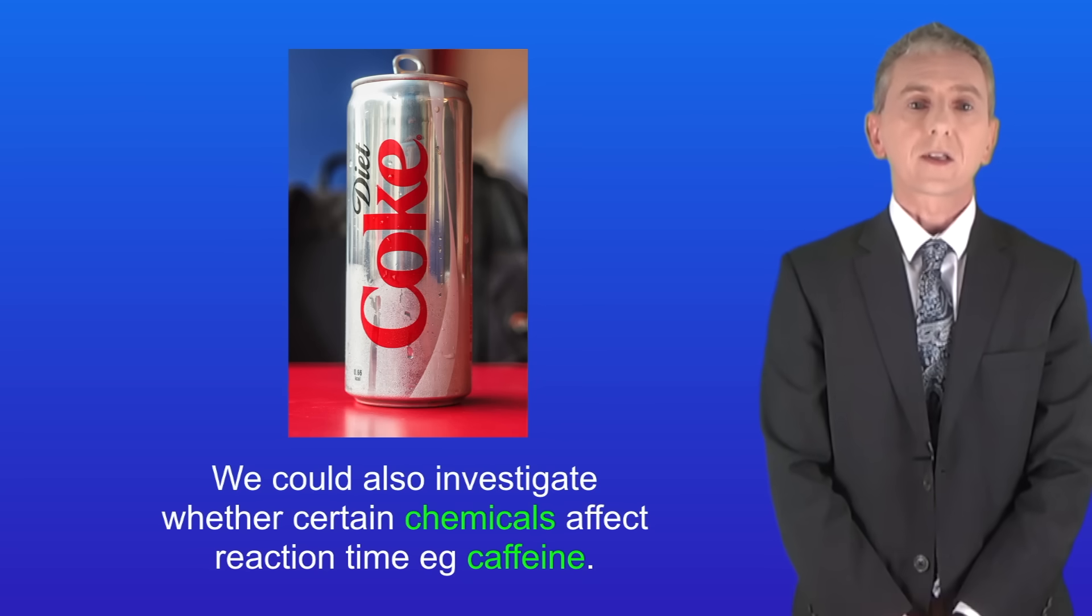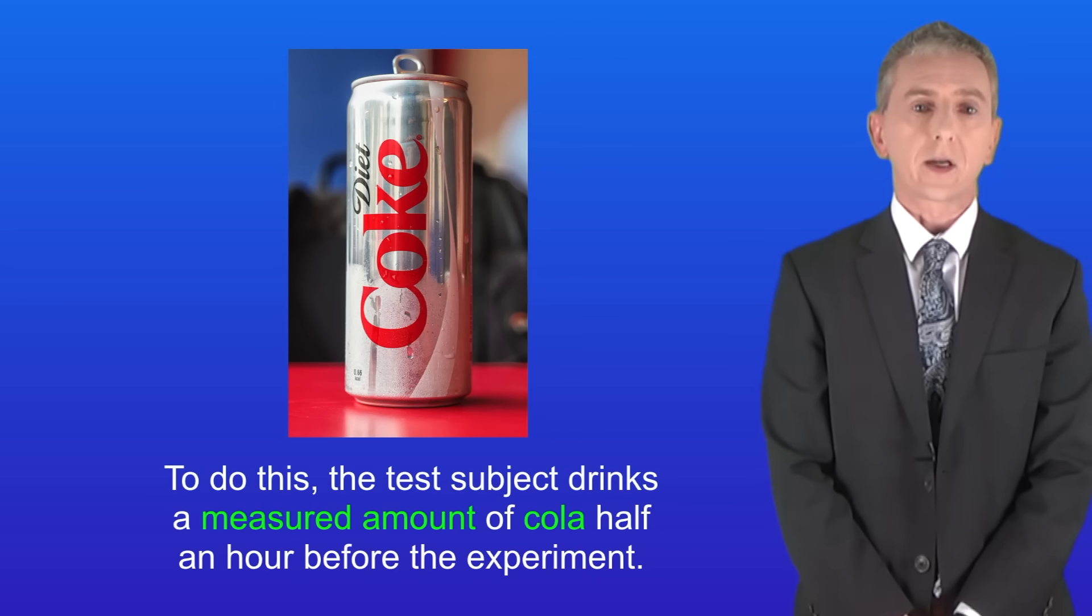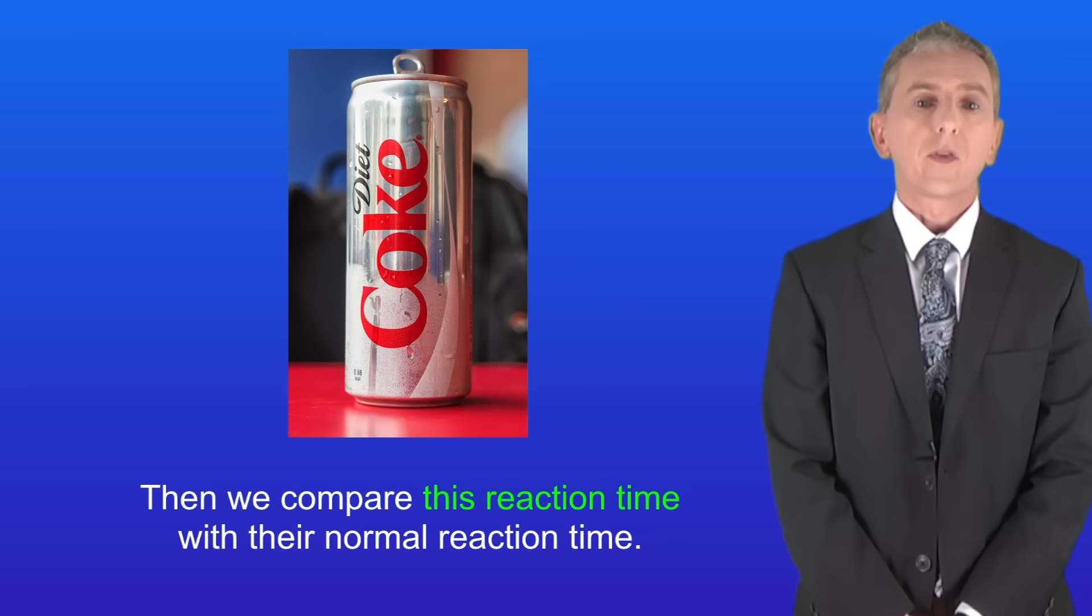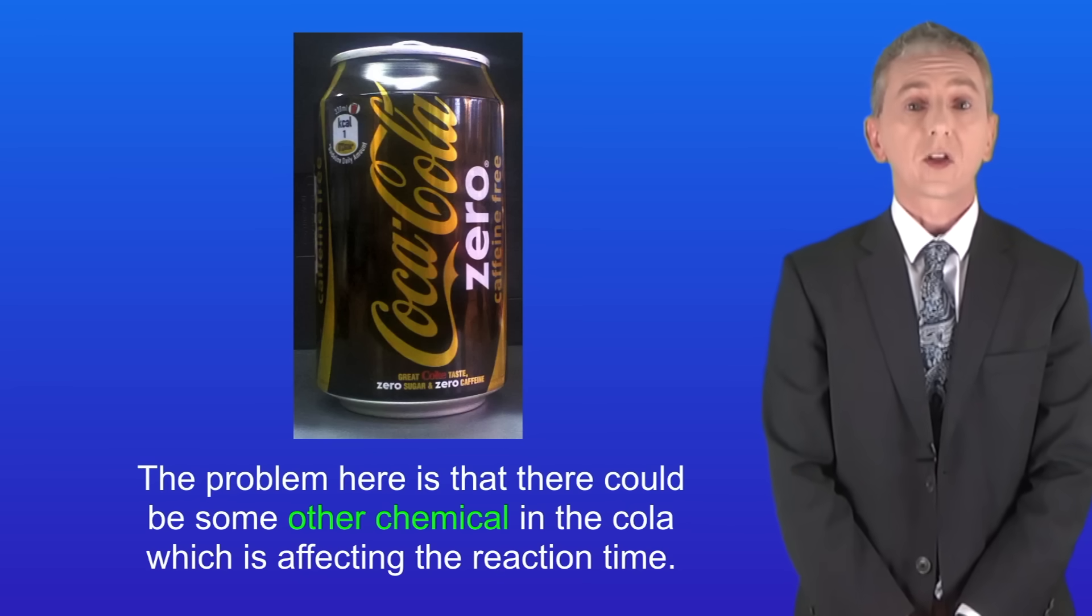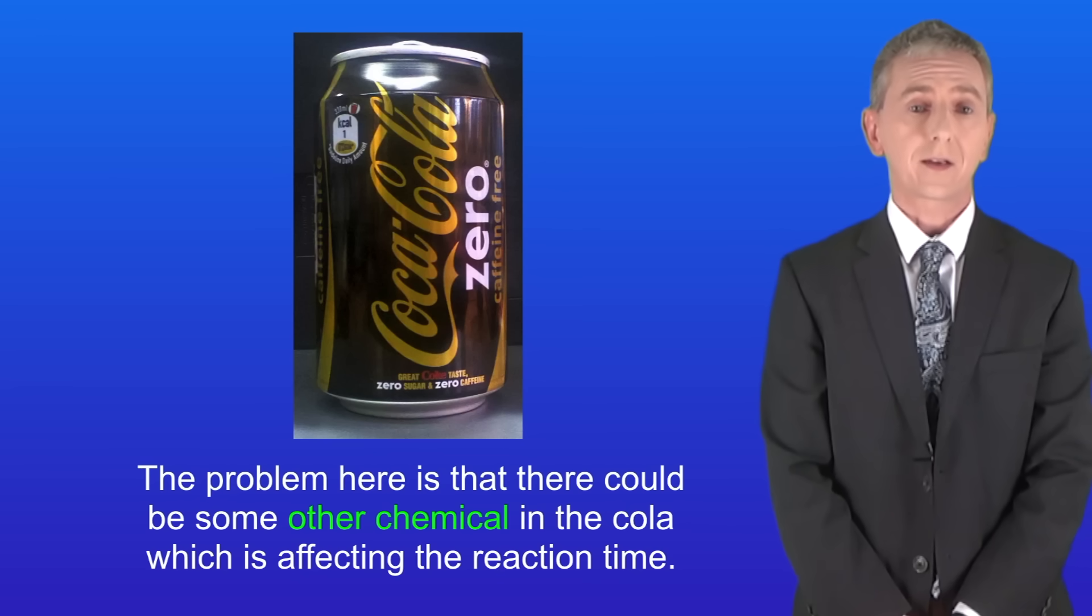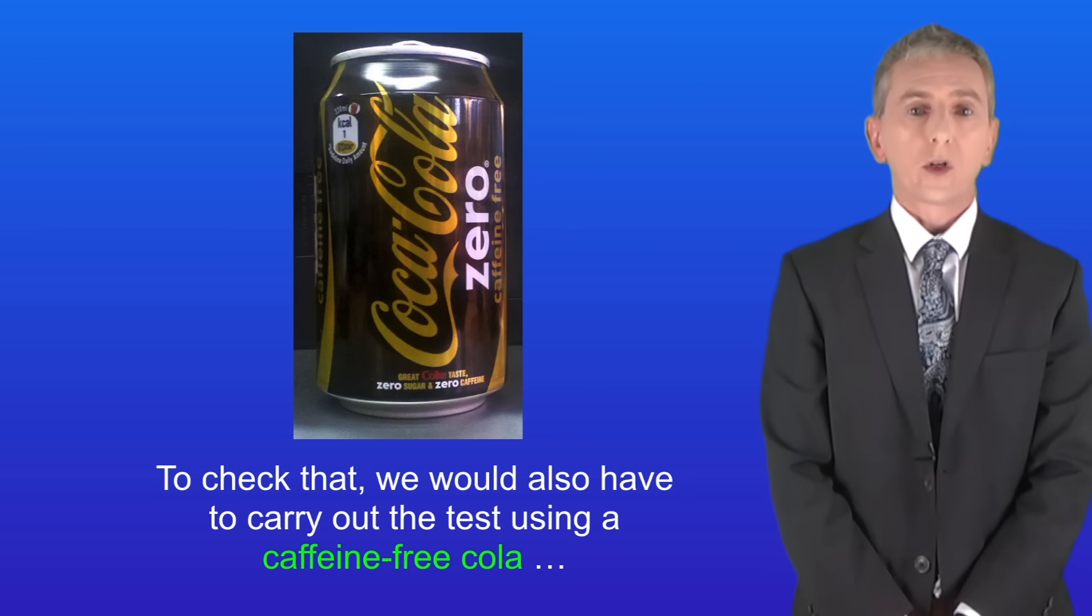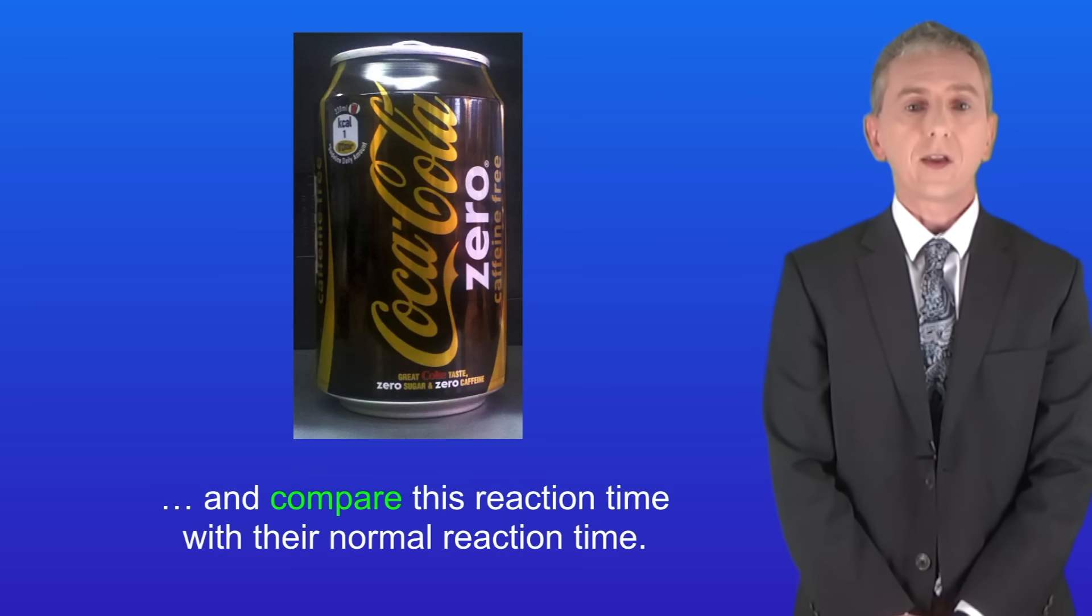We could also investigate whether certain chemicals affect reaction time, for example caffeine. To do this the test subject drinks a measured amount of cola half an hour before the experiment, and then we compare this reaction time with their normal reaction time. The problem here is that there could be some other chemical in the cola which is affecting the reaction time. To check that we'd also have to carry out the test using a caffeine free cola and compare this reaction time with their normal reaction time.